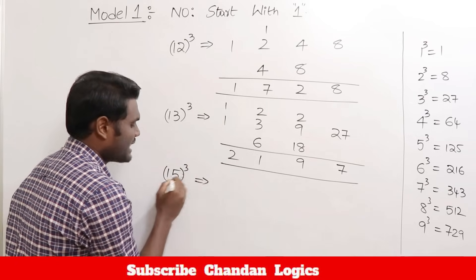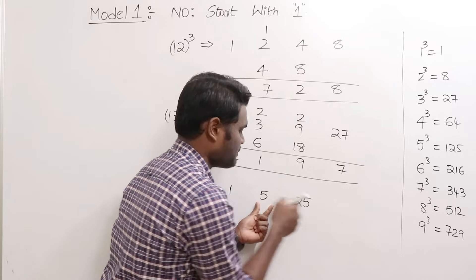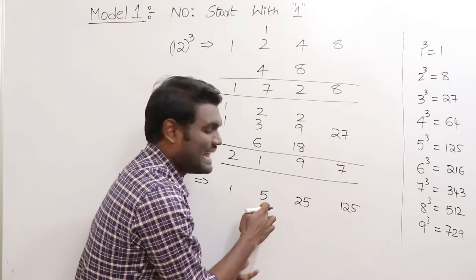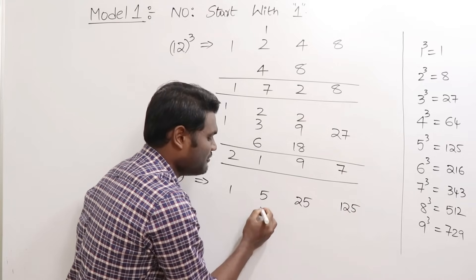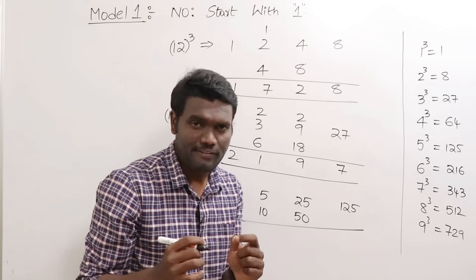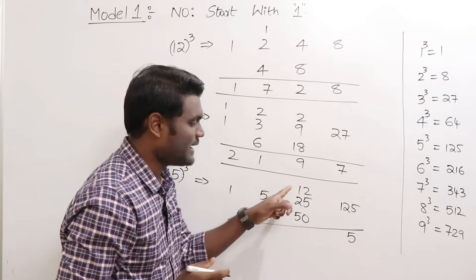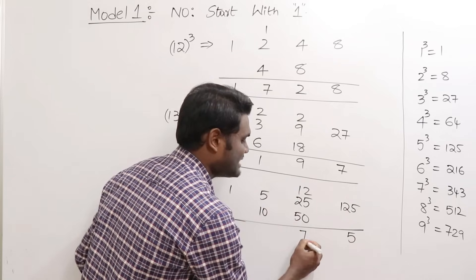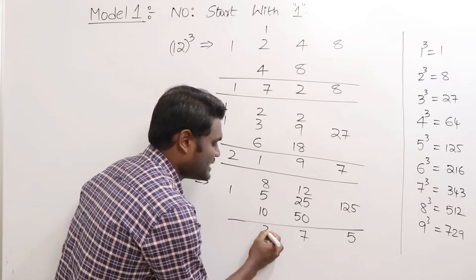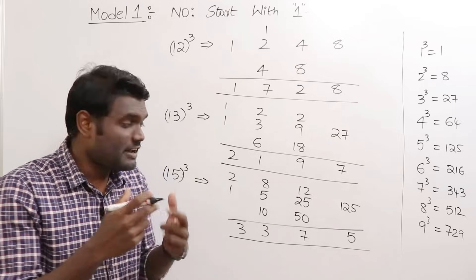5 squared is 25; 5 cubed is 125. Leave first and last, double the middle: double 5 is 10, double 25 is 50. Now add: 125 plus 0 is 125 — write 5, carry 12; 50 plus 25 is 75, plus 12 carry is 87 — write 7, carry 8; 10 plus 5 is 15, plus 8 is 23 — write 3, carry 2; 2 plus 1 is 3. So 15 cubed equals 3375.